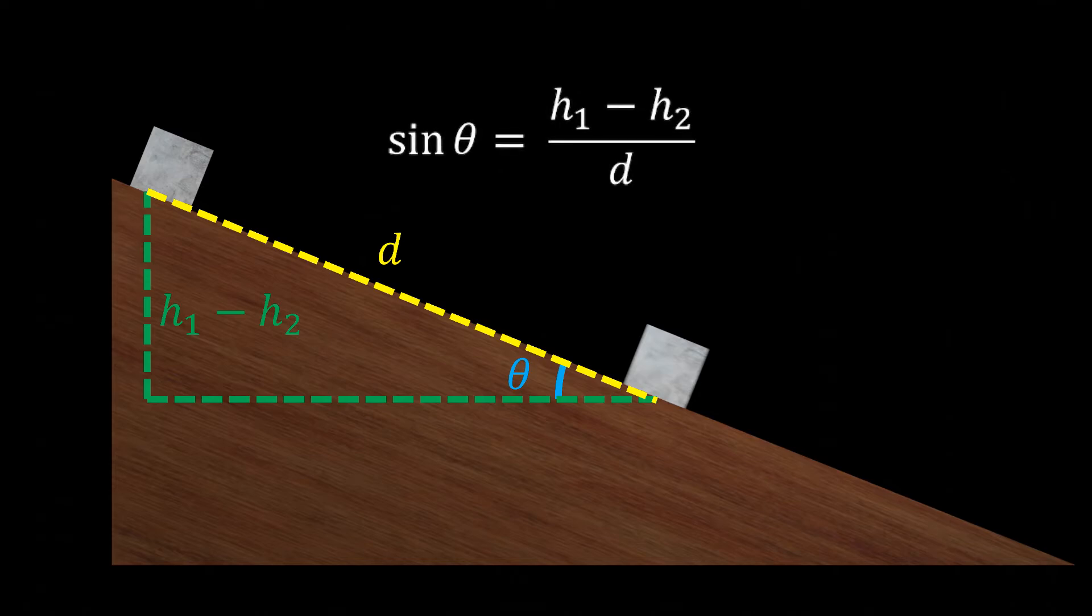The sine of theta is equal to the opposite side, which is the difference in heights, divided by the hypotenuse, d. So the height difference equals d times sine theta.